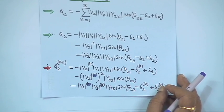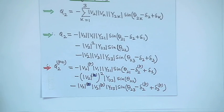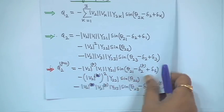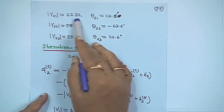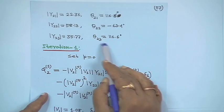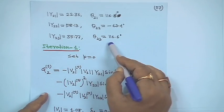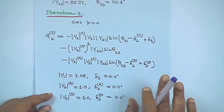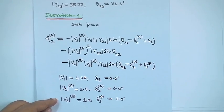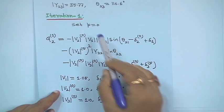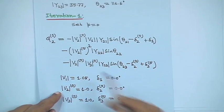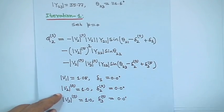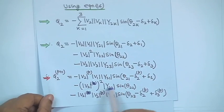This is Q₂^(p+1). The Y matrix is the same as example 1 — no change. At iteration p = 0, we compute Q₂¹. Only Q power injection at bus 2 is being computed at present, after which we proceed with the iterative process. Substituting all initial values (δ₂⁰ = 0, δ₃⁰ = 0, |V₁| = 1.05, |V₂| = 1, |V₃| = 1), you get Q₂¹ = minus 1.0067 per unit.